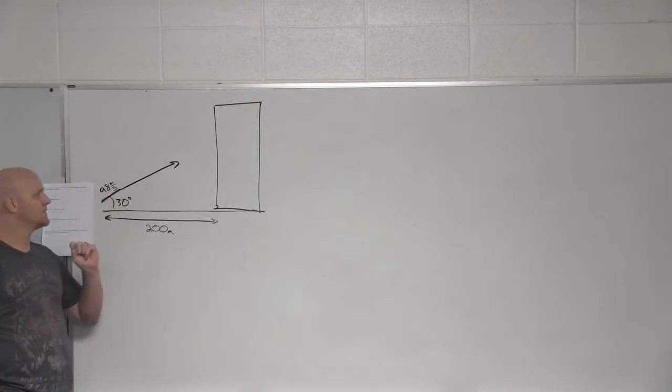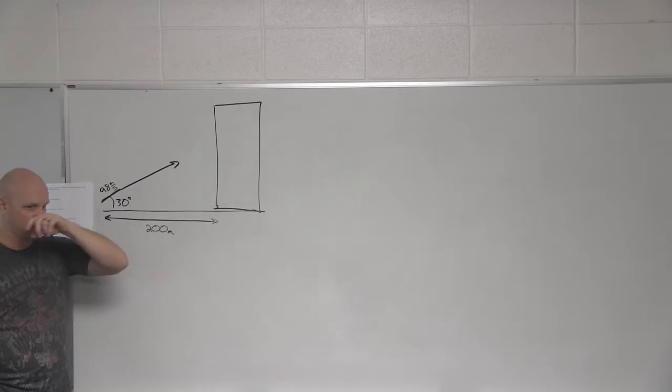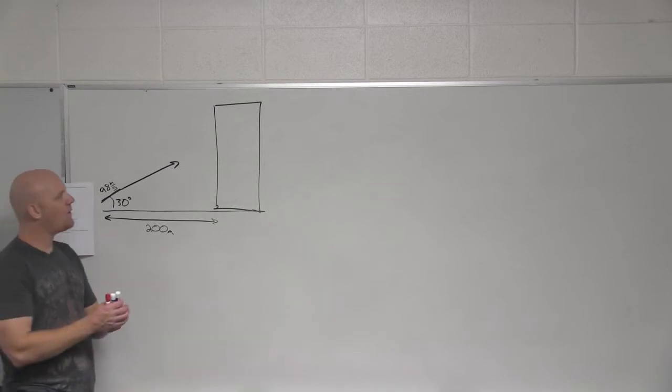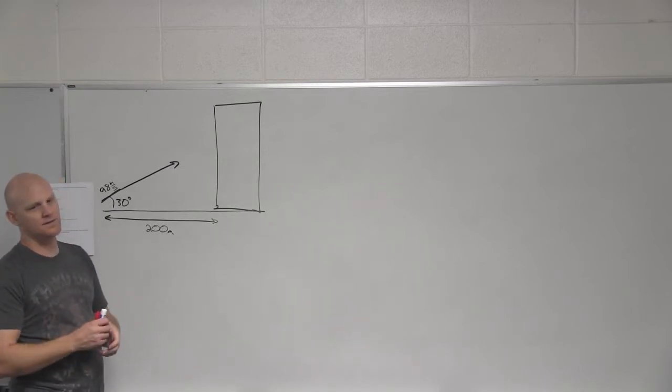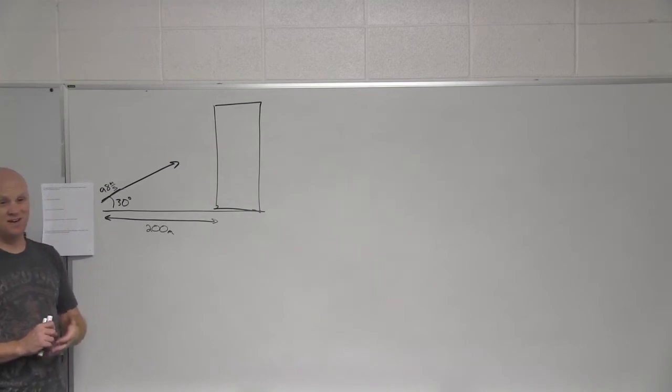So I'm gonna launch this potato out of a potato gun with a velocity of 98 meters per second at an angle of 30 degrees above the horizontal, and we're launching it at this building here. This building is 200 meters away, and the question is how high up the building does the potato hit it?